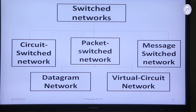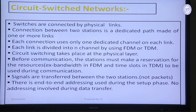There are three types of switch networks: circuit switch network, packet switch network, and message switch network. Packet switch network is also categorized into two types: datagram network and virtual circuit network. First, we discuss the circuit switch network. When two users communicate with each other via a dedicated physical path, it is called circuit switching.